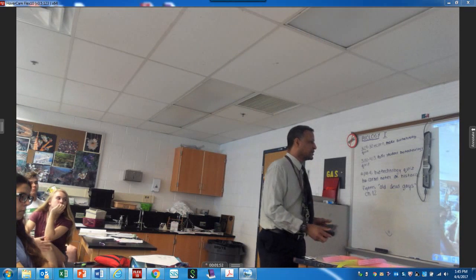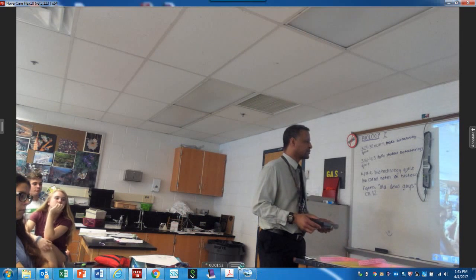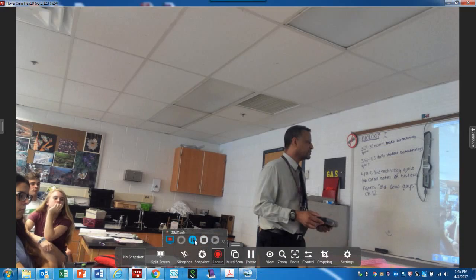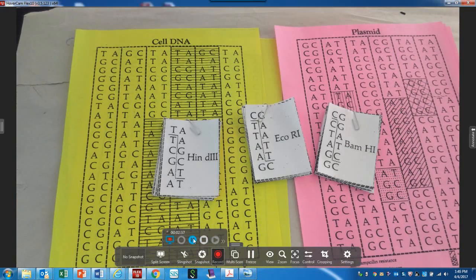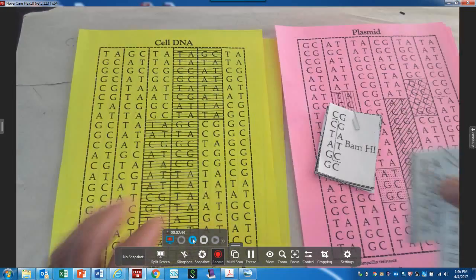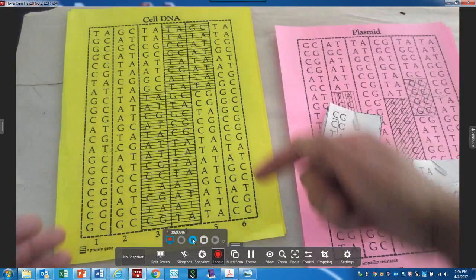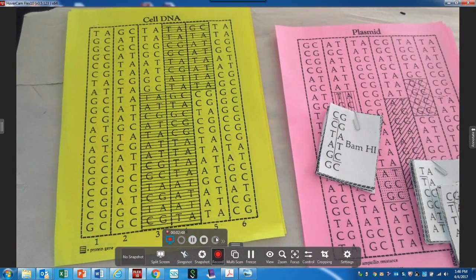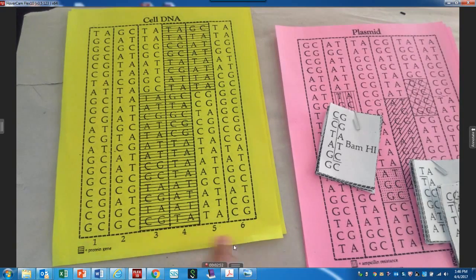All right, we're back. Now what you have to do is the DNA that is your desired gene has to be in this sequence. So you've got to cut one through six.